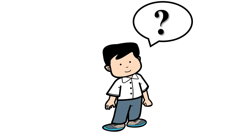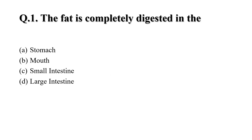Now let us see what you have learned today. Question 1: Fat is completely digested in which part of the body? Option A: Stomach. Option B: Mouth. Option C: Small intestine. Option D: Large intestine. Your correct answer is Option C — the small intestine.